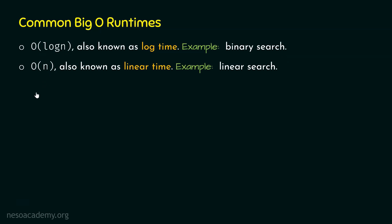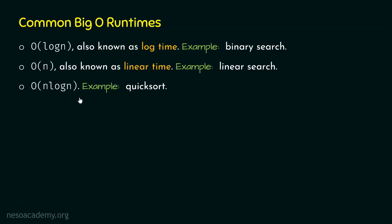The third common big O runtime is O(N log N), which is formed by combining O(N) and O(log N). The example algorithm is quick sort, which is one of the sorting algorithms and is the fastest sorting algorithm available. The time it takes is O(N log N).